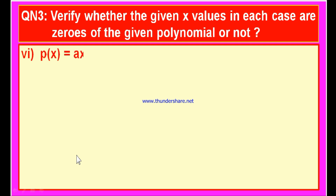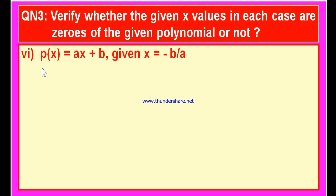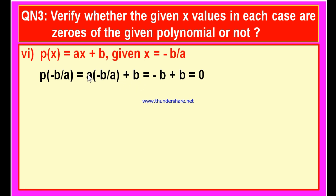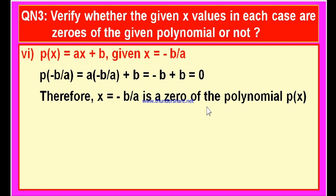Here is the sixth bit: P of x is equal to ax plus b, and given x is equal to minus b by a. We have to verify whether minus b by a is a zero of this polynomial. Substituting x is equal to minus b by a: P of minus b by a is equal to a into minus b by a plus b. This a cancels once: 1 into minus b is minus b plus b. What is minus b plus b? It is 0. Therefore, if we substitute x is equal to minus b by a, we get the value of the polynomial 0, so x is equal to minus b by a is a zero of the polynomial P of x.